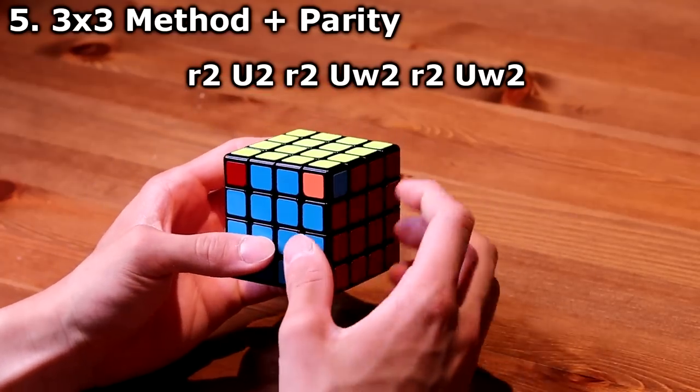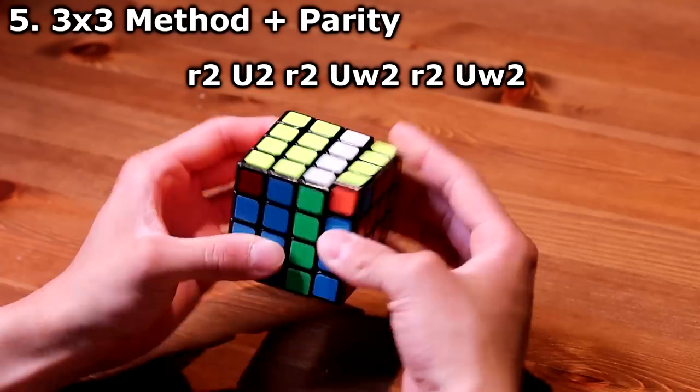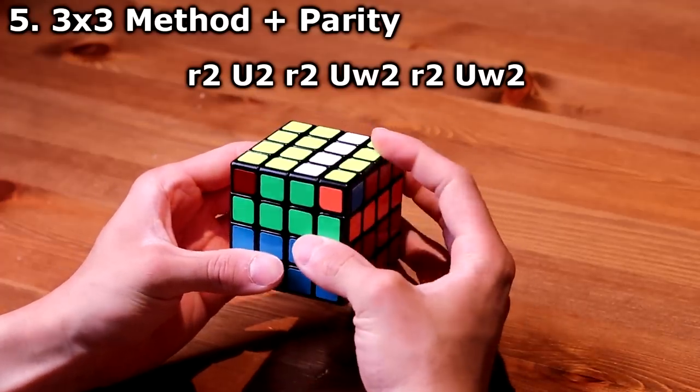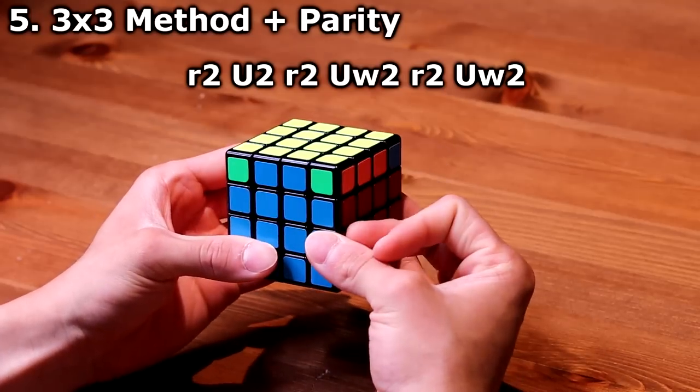So, this algorithm is a small r2, U2, small r2, Uw2, small r2, Uw2.